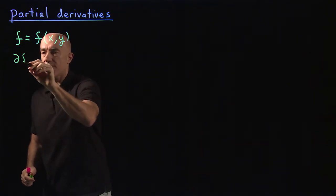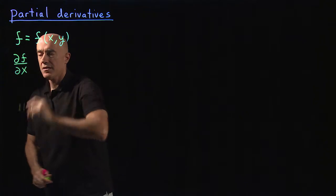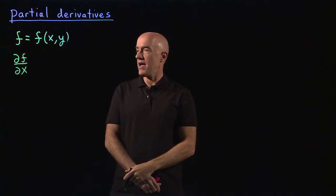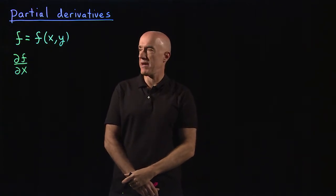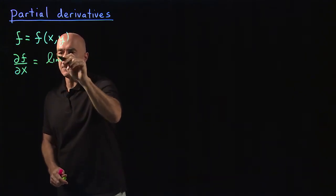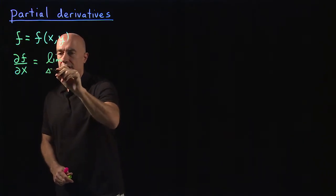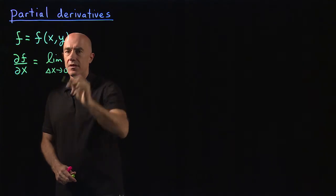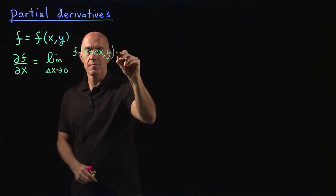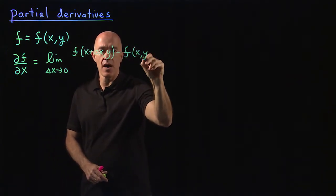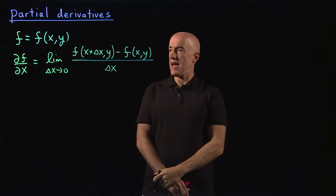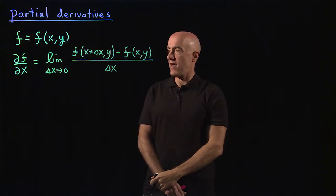So we define the partial derivative of f with respect to x. The symbol we use is this curly d, and we call this partial f with respect to x. Remember your definition of the derivative — here we have a similar definition: the limit as delta x goes to zero of f of (x plus delta x, y) minus f of (x, y), divided by delta x.